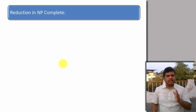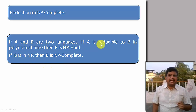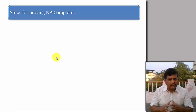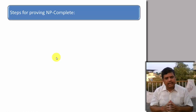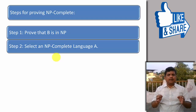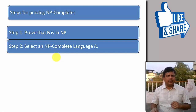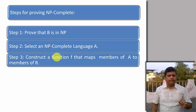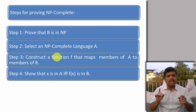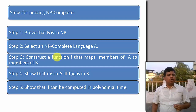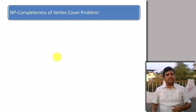Let us see the reduction in NP-complete. If A and B are two languages and A is reducible to B in polynomial time, then B is NP-hard. And if problem B is also an NP problem, then B is NP-complete. The steps involved in showing NP-completeness of any problem are: first, prove that B is an NP problem; second, select a known NP-complete problem A; third, construct a function F that maps members of A to members of B such that X is in A if and only if F(X) is in B; and finally, show that F can be computed in polynomial time.